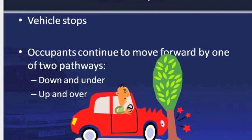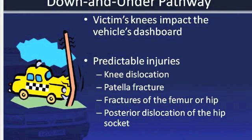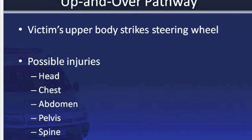In a frontal impact such as a head-on collision, the vehicle stops and the occupant continues to move forward by one of two pathways, often referred to as down and under or up and over — in which case they go down and under the dashboard, or up and over the dashboard. The down and under pathway may be seen when the occupant is not wearing a lap and shoulder restraint system, or when wearing only the shoulder harness, or only a lap restraint without the shoulder harness. The victim's upper body strikes the steering wheel. Possible injuries include head, chest, abdomen, pelvis, and spinal injuries.